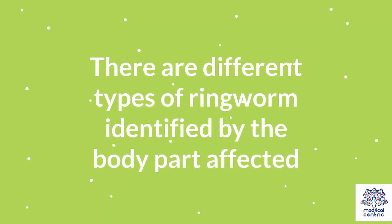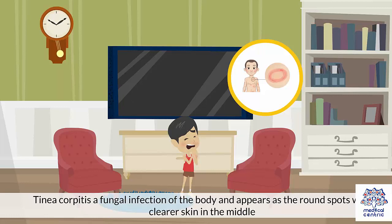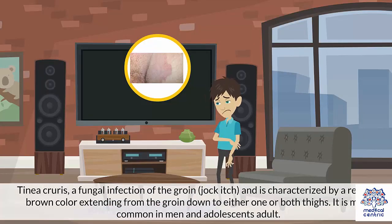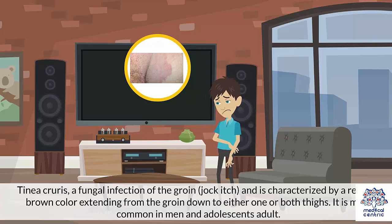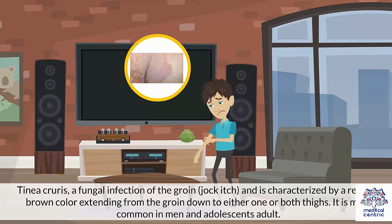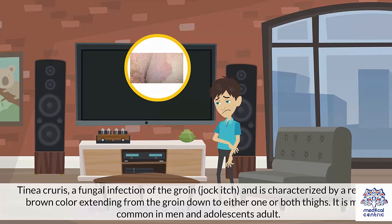There are different types of ringworm identified by the body part affected. Tinea corporis is a fungal infection of the body and appears as round spots with clearer skin in the middle. Tinea cruris is a fungal infection of the groin, or jock itch, and is characterized by a reddish-brown color extending from the groin down to either one or both thighs.